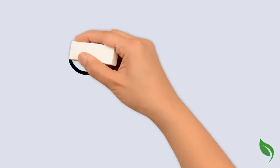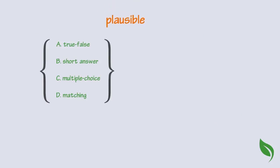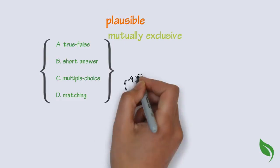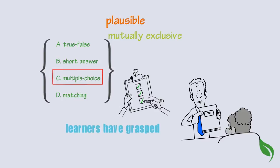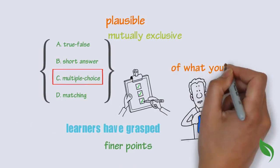Number six. All the alternatives in a test item should be plausible and mutually exclusive. Carefully chosen, credible-seeming alternatives will help you confirm that your learners have grasped the finer points of what you've taught.